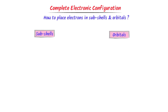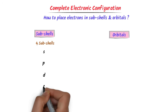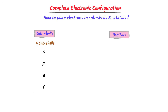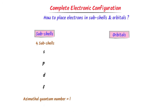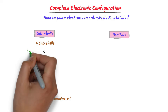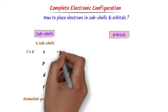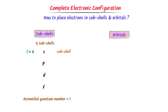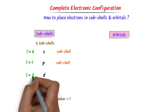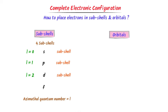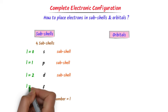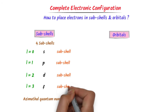We know that there are four different subshells: S, P, D, and F. We represent subshells by azimuthal quantum number L. When L is equal to 0, it is S subshell. When L is equal to 1, it is P subshell. When L is equal to 2, it is D subshell. When L is equal to 3, it is F subshell.